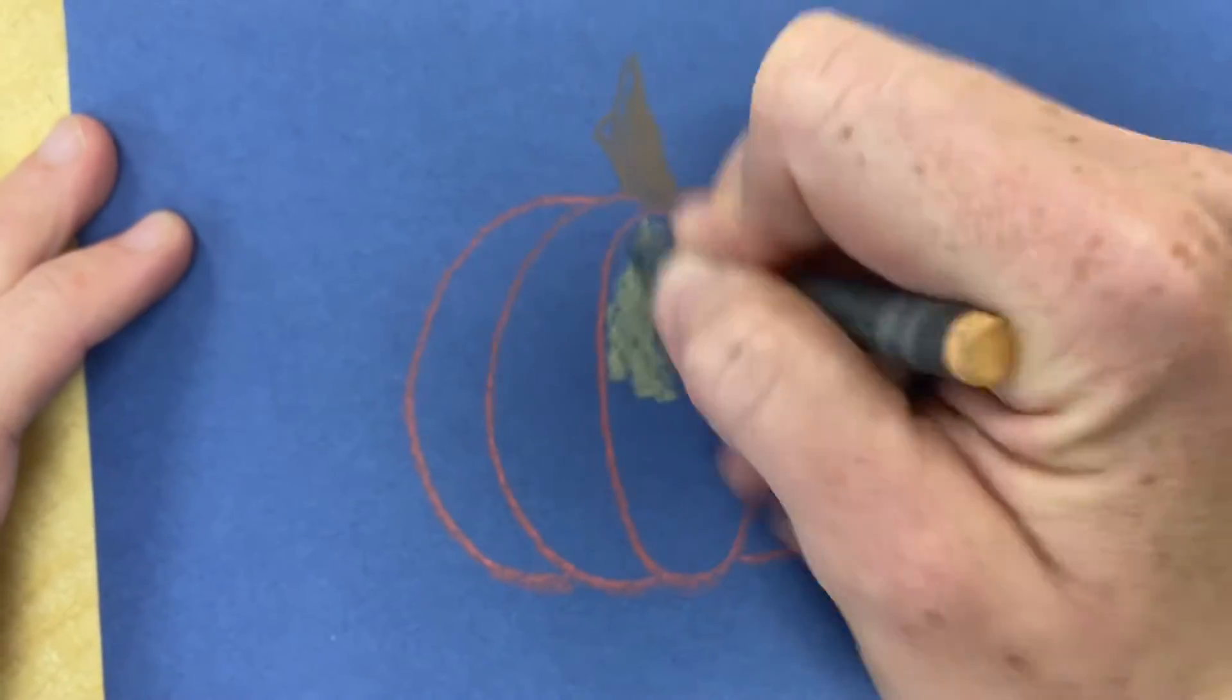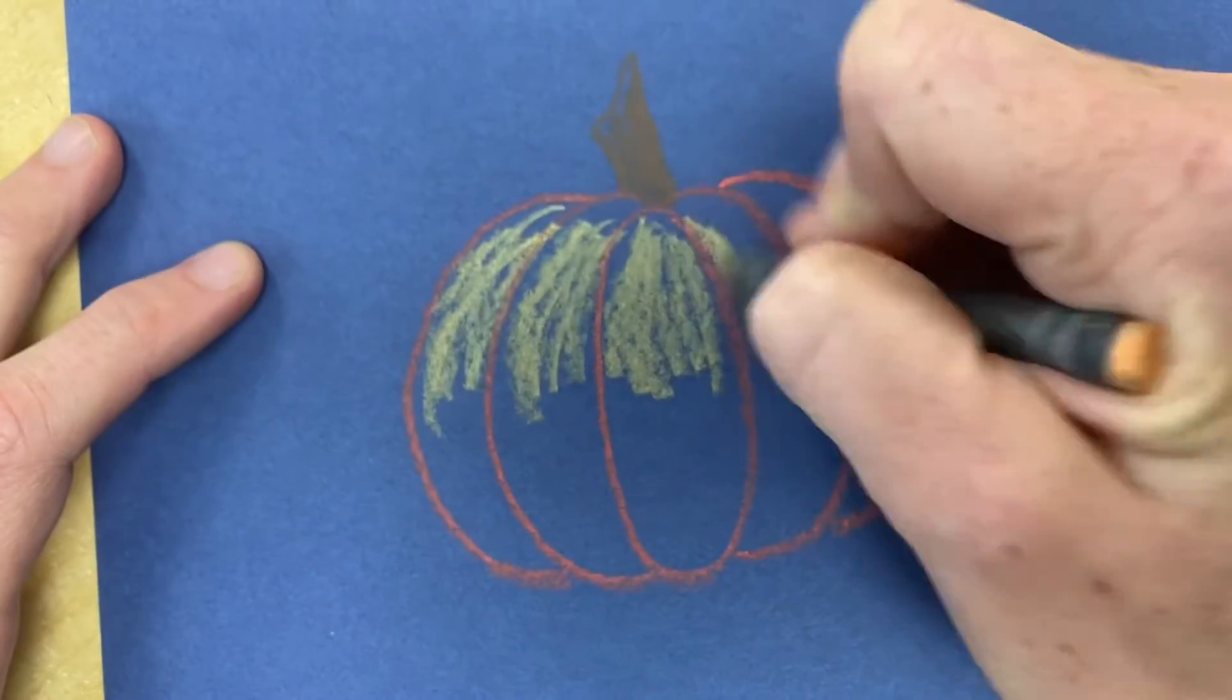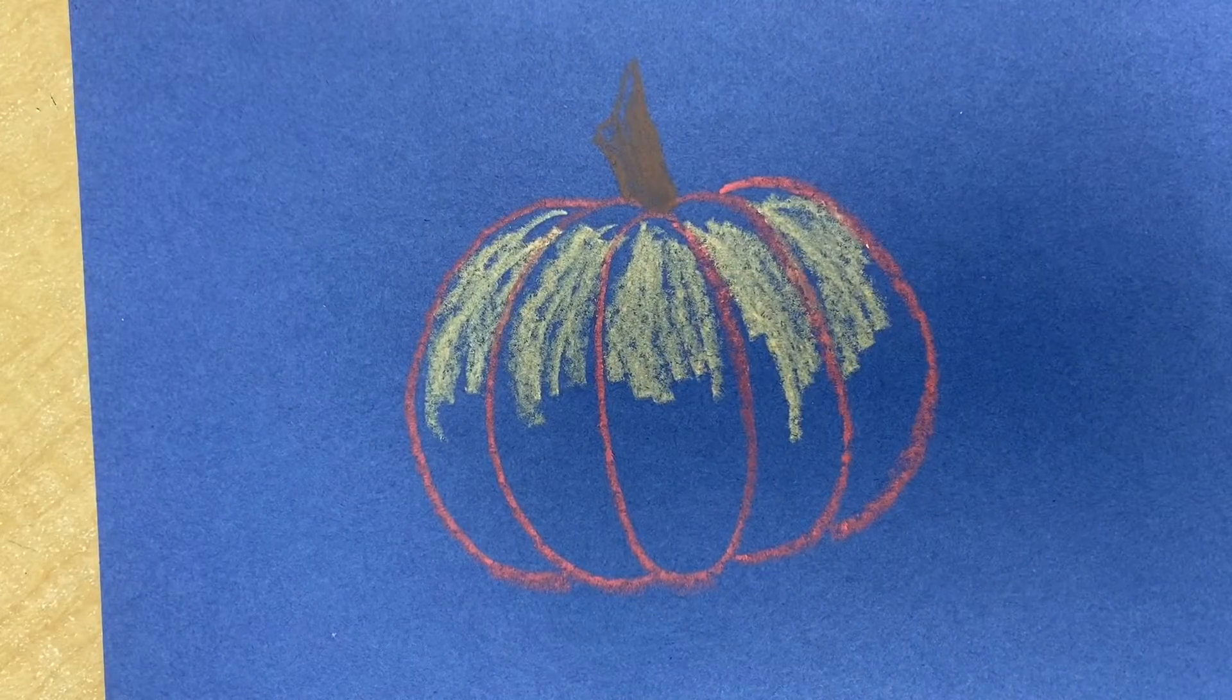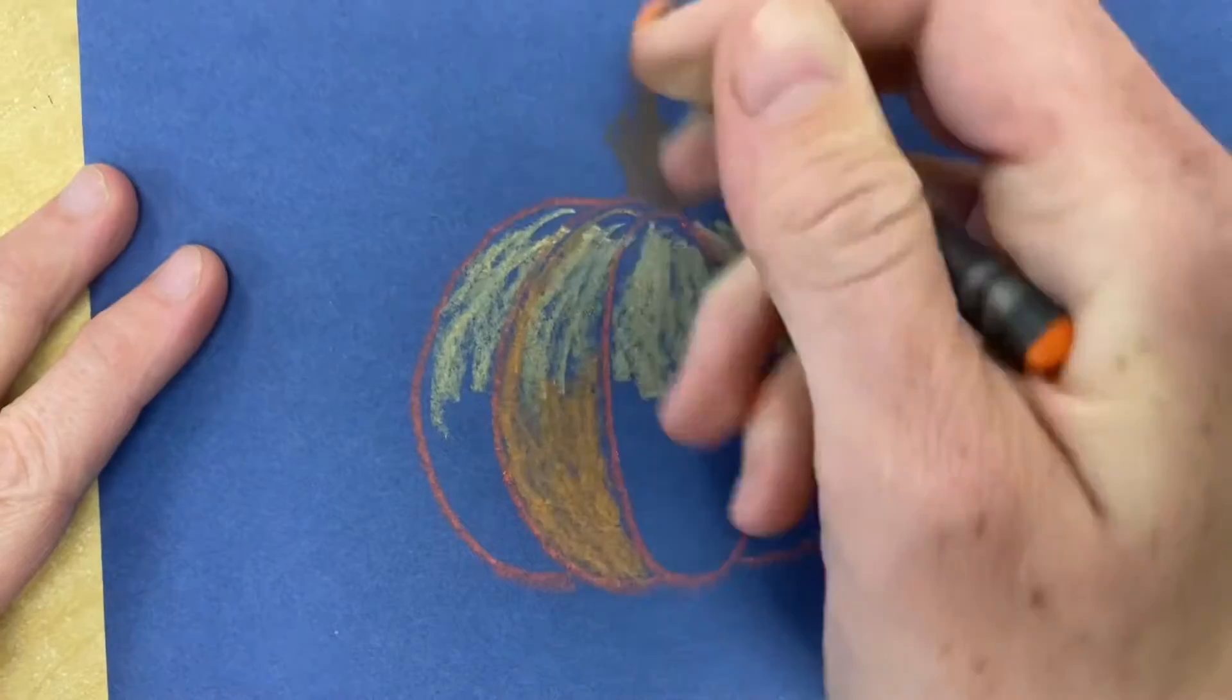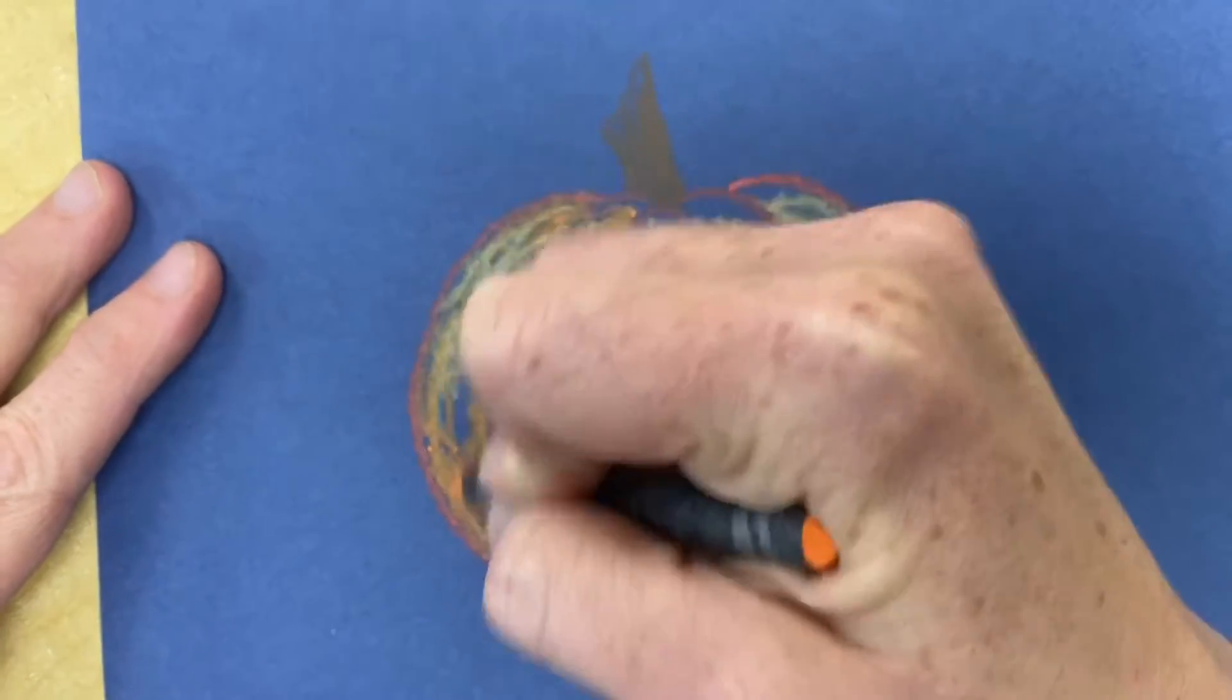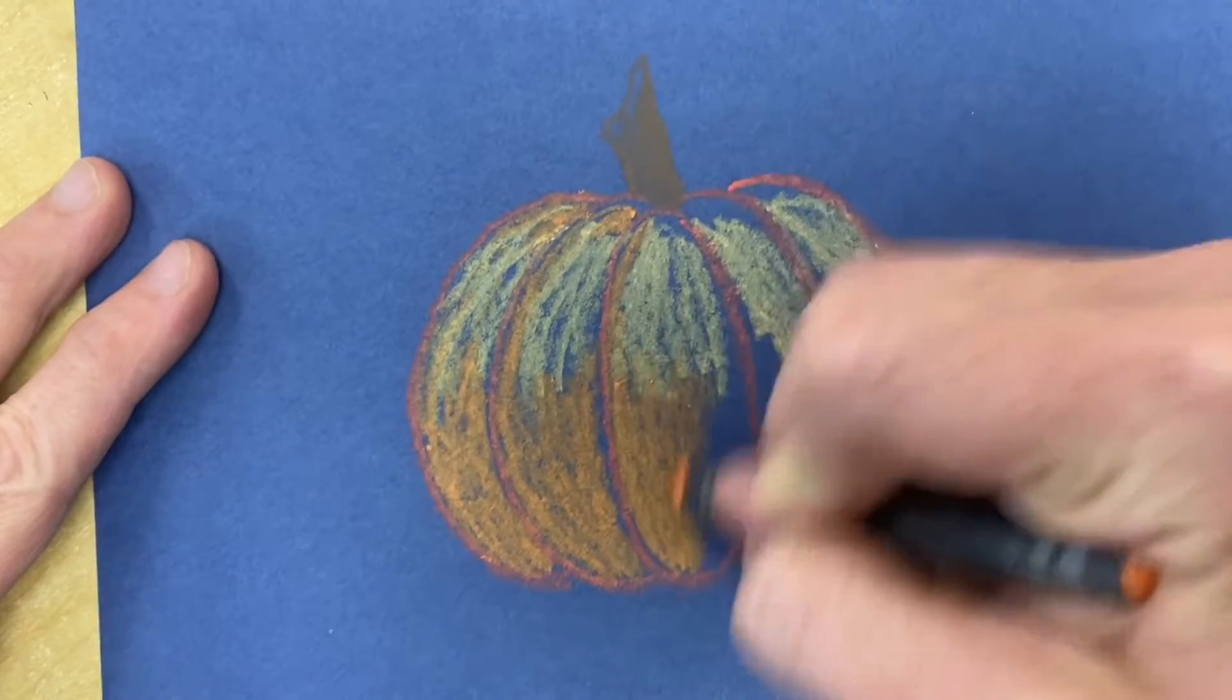To color my pumpkin, I started with a light yellowish orange at the top to make highlights. I kind of fade it out towards the bottom half, and then I'm going to start mixing in a regular orange for the rest of it. Eventually I will add a darker reddish orange for shadows and to blend it all together.